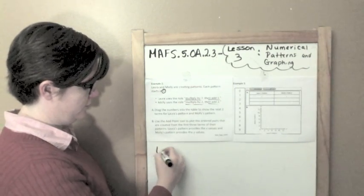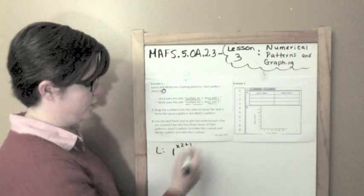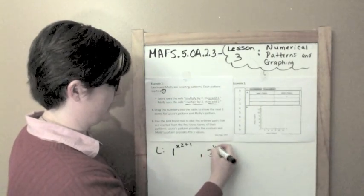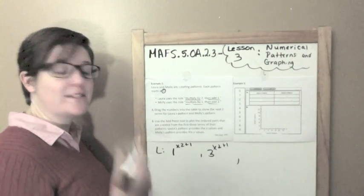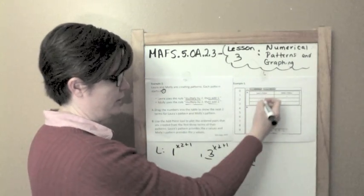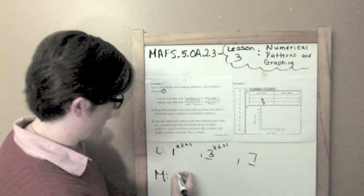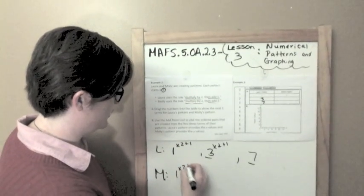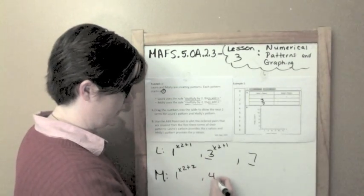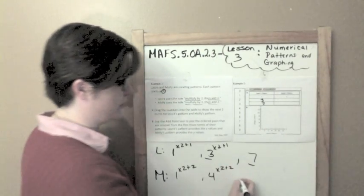Laura starts at 1. She multiplies by 2 and adds 1. So 1 times 2 is 2 plus 1 is 3. Then 3 times 2 is 6 plus 1 is 7. I only needed the next 2 terms, so I'm going to plug in 3 and 7 for Laura's pattern. Now Molly starts at 1, and her pattern is multiply by 2 then add 2. So 1 times 2 is 2 plus 2 is 4. Then 4 times 2 is 8 plus 2 is 10.